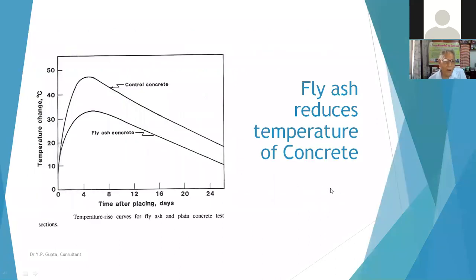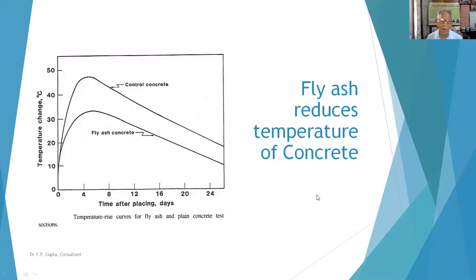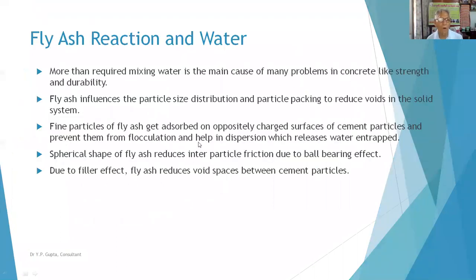The temperature reduction in concrete is shown in a graph — the upper curve is control concrete with OPC cement and the lower curve is when fly ash is added. Fly ash is not only used for making cement but can also be used directly as one part of the ingredients of concrete — along with sand, aggregate, and others — so fly ash can serve as one ingredient in the concrete mix.